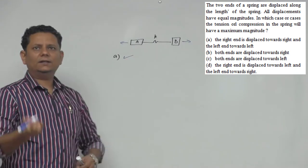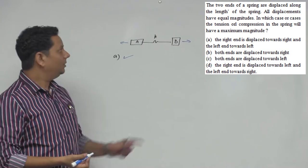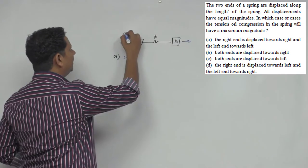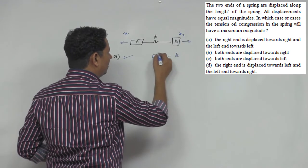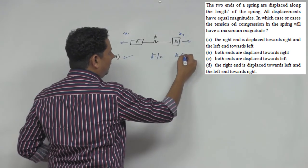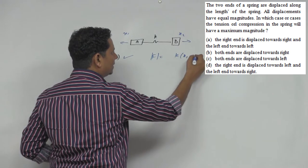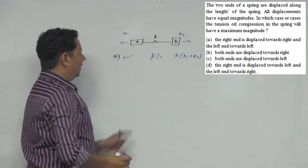Of course, your tension will have maximum magnitude because the displacement is x1 and x2. The force magnitude is K times (x1 plus x2).